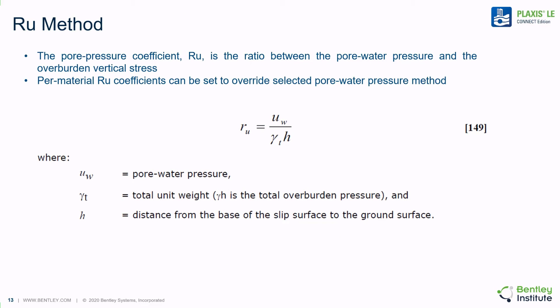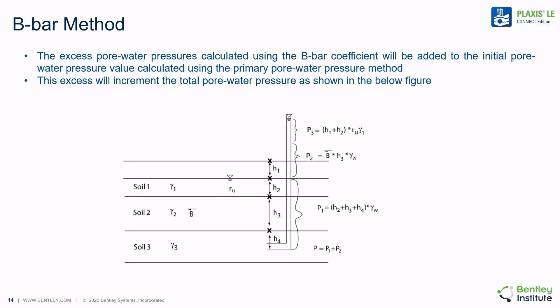The R sub U method allows the pore water pressures to be defined as the ratio between pore water pressure and overburden stress. The R sub U coefficients can be set to override a selected pore water pressure method. The definition of R sub U values is shown in equation 149. The B bar method is also implemented in the software to define excess pore water pressures in a particular layer. The figure below shows the calculation of total head in a three-layer system.